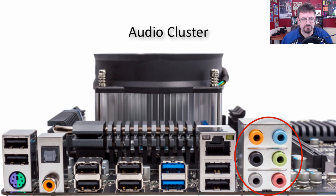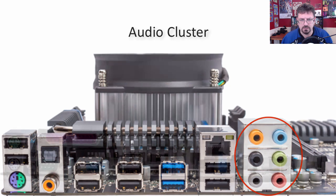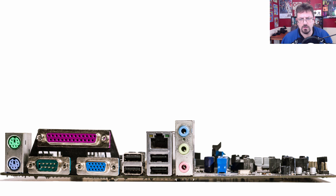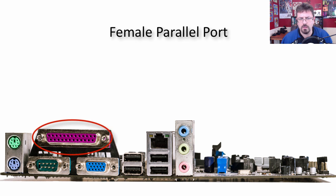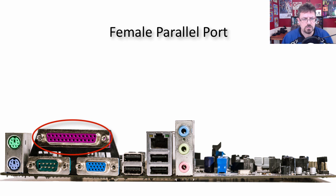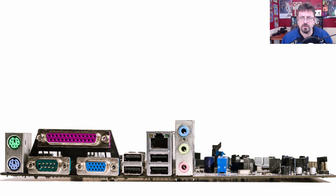Over here we have the audio cluster. The main stereo speaker is green — and yes, you do need to know these for the A-Plus exam. The line-in connector is blue, the microphone connector is pink, and the center subwoofer is orange. Over here we have an older back panel connector — a female parallel port. Male connectors have the pins sticking out; female connectors have the receptors. Parallel ports were used primarily for printers, but now we're using USB or wireless for printers, so the parallel port has pretty much gone bye-bye.